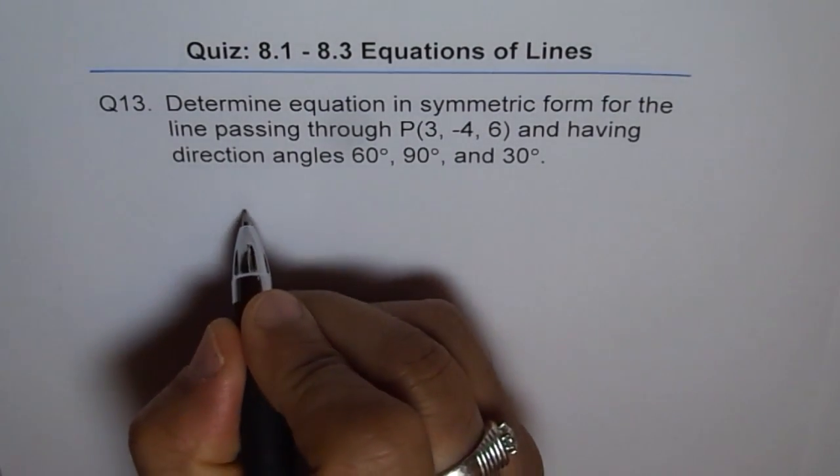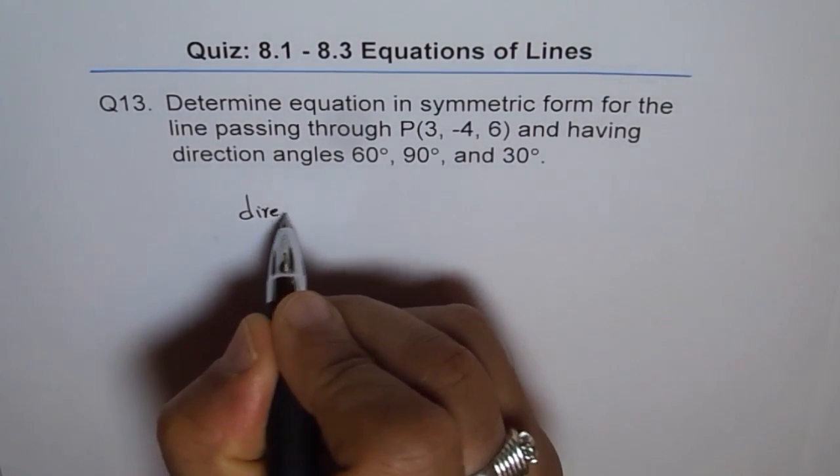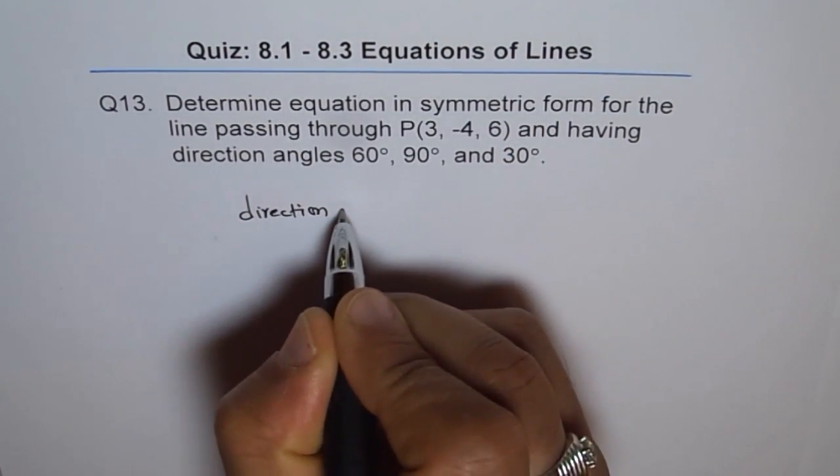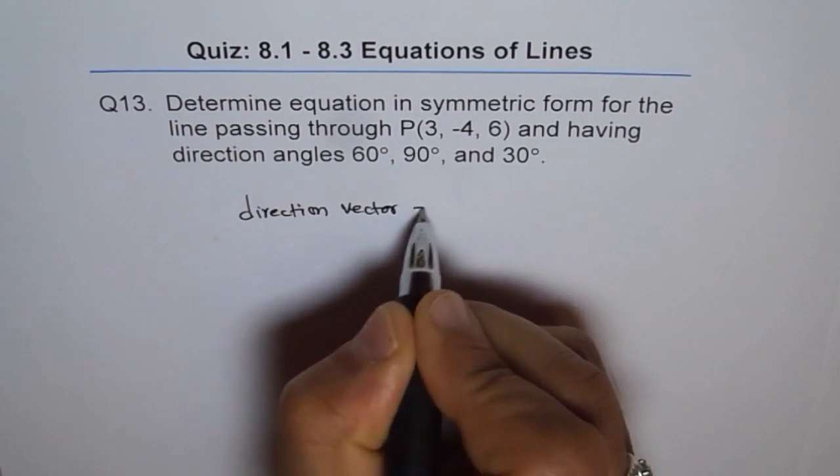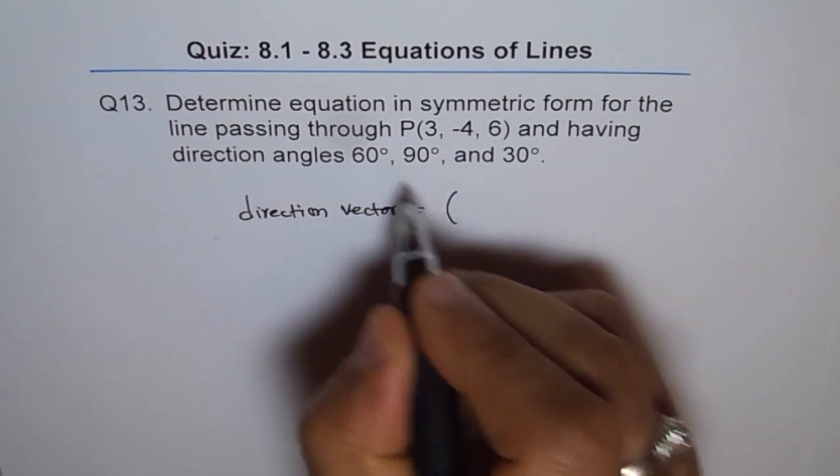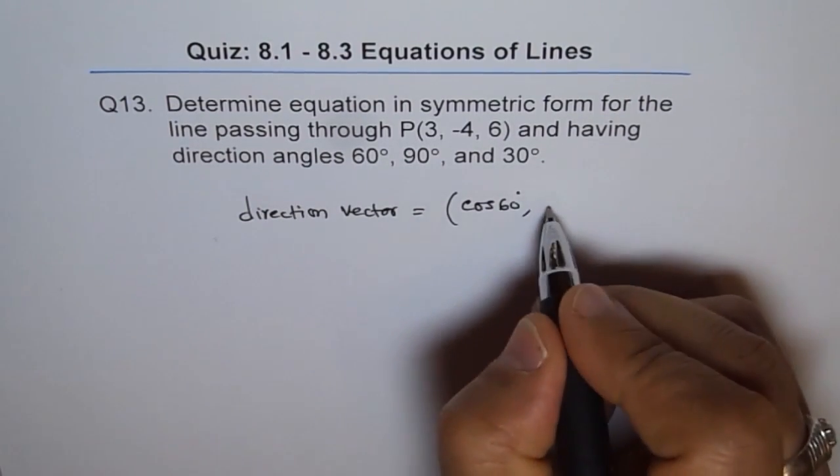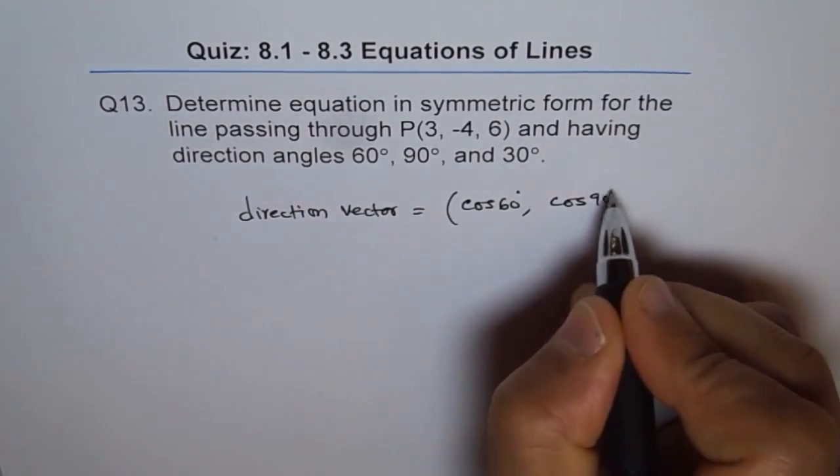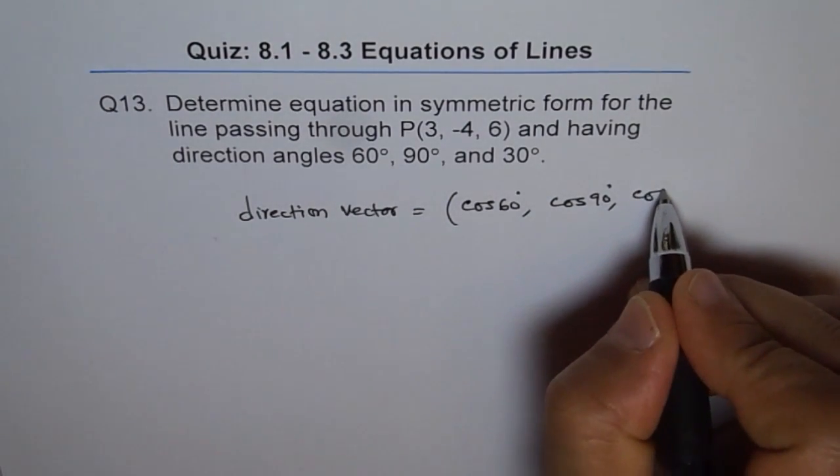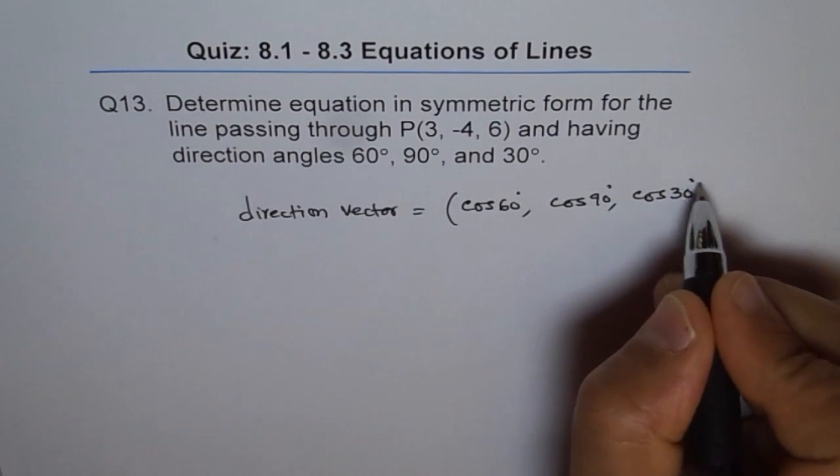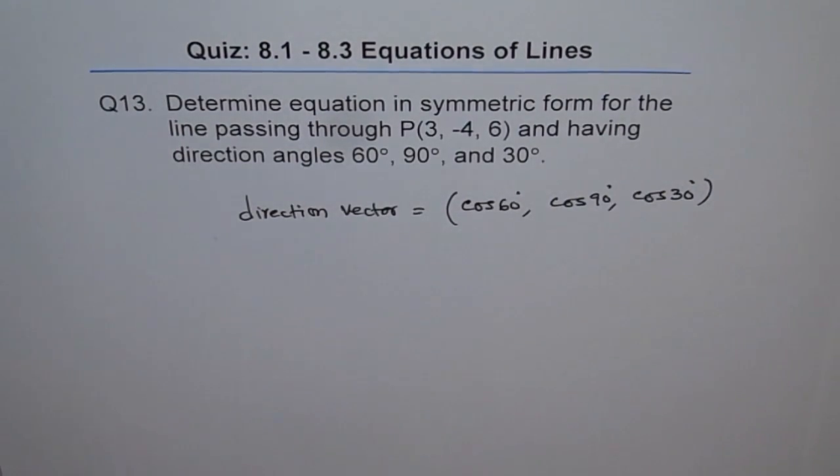You can write direction vector as equals to cos of 60, cos of 90 degrees and cos of 30 degrees. That's the direction vector when we are given angles which line makes with each axis.